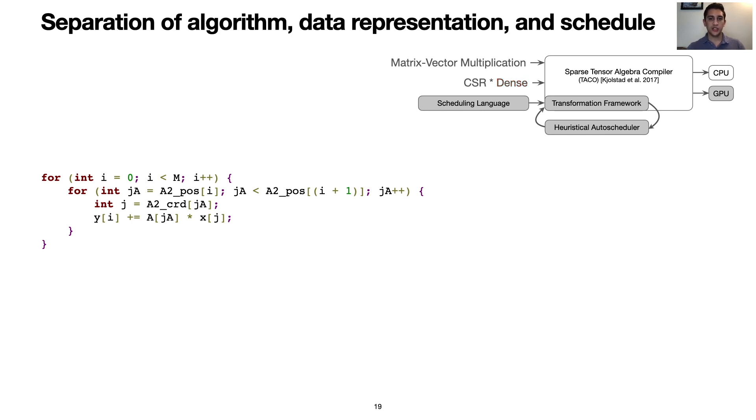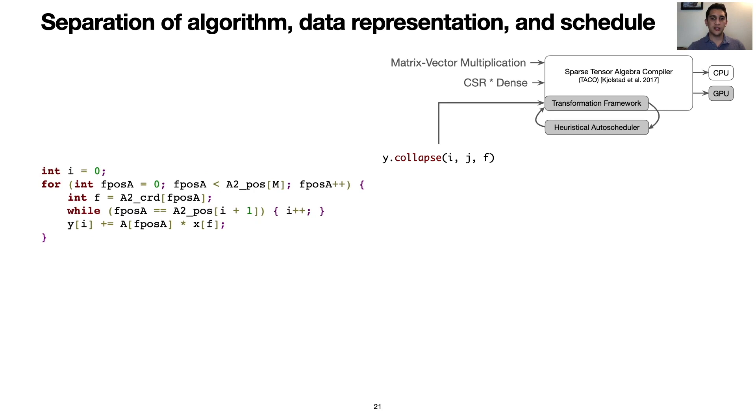We can now start transforming this code with the scheduling language to generate an optimized GPU kernel for this problem. We start with collapsing the loops to iterate directly over the non-zeros of the sparse matrix. Instead of iterating over the non-zeros within each row, this code now iterates over all of the non-zeros and tracks changes to the row value within the inner loop.